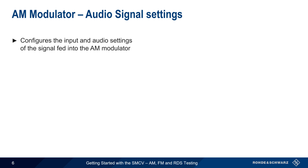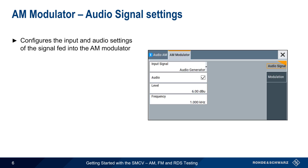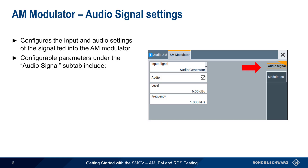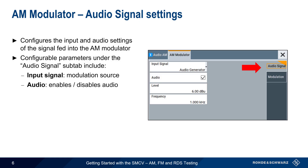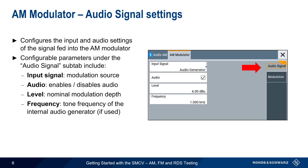The second tab in analog AM settings is AM Modulator, and the Audio Signal sub-tab defines basic AM modulation parameters. The first is the source of the AM modulation, which we'll cover in more detail on the next slide. The audio modulation can be toggled on and off, and the nominal modulation depth level can be set as well. The last parameter is the frequency of the tone created by the SMCV's internal audio generator, when this is used as a modulation source.